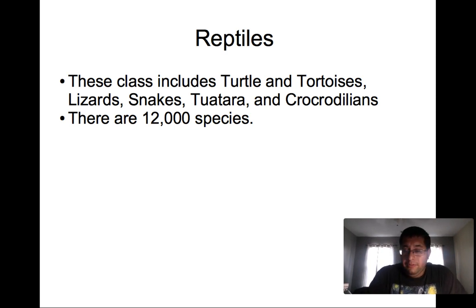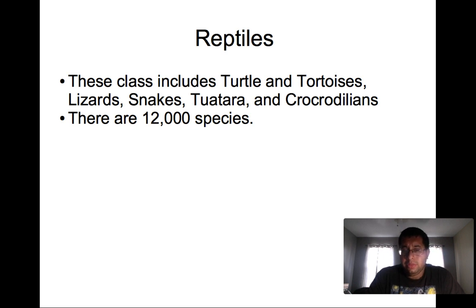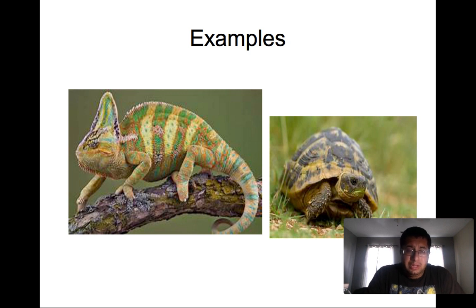Reptiles — one of my favorite classes. This class includes turtles and tortoises, lizards, snakes, tuatara, and crocodilians. There are at least 12,000 species in the world today. Good examples include a chameleon and a land tortoise.